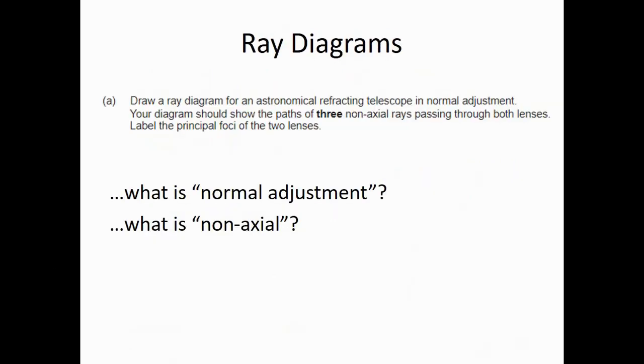So what's more complex at A-level than those diagrams you've just seen? Well, this is a question taken directly from an A-level paper. Draw a ray diagram for an astronomical refracting telescope in normal adjustment. Your diagram should show the paths of three non-axial rays passing through both lenses. Label the principal foci of the two lenses. And there are a few questions that we're probably asking ourselves right now. What does normal adjustment mean? What do you mean by non-axial rays? And possibly some others. I think the best way to show you these is just to do it. While I'm going through this process, I'd like you to start writing a series of instructions to yourself about how to do this. I'll make it as clear as I can. If you have any questions, you can always ask.